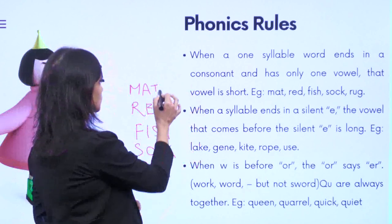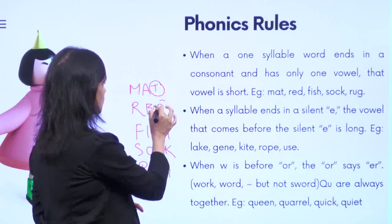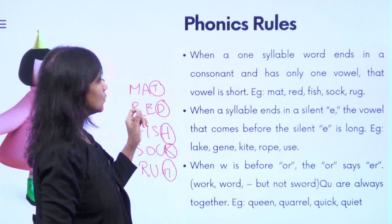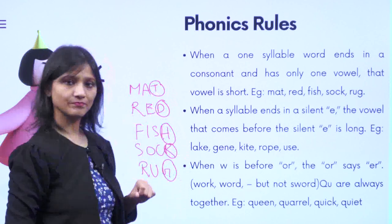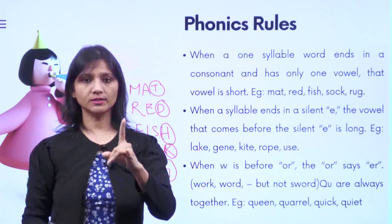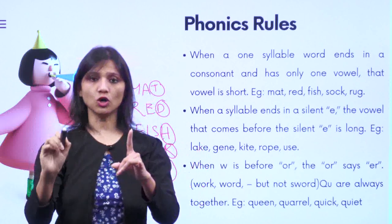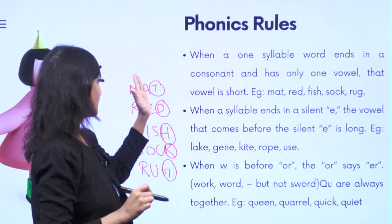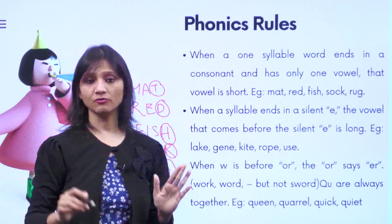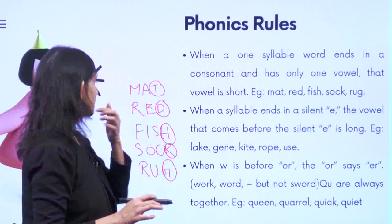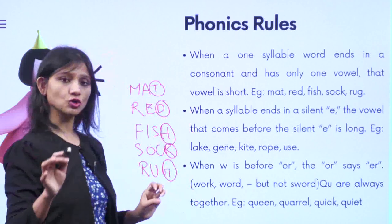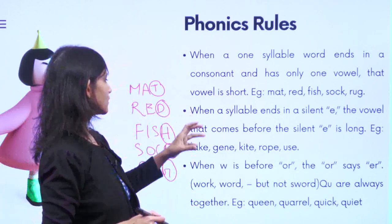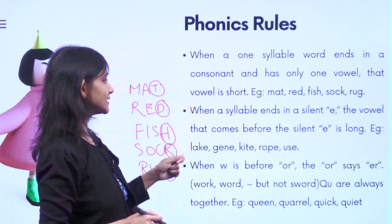When a one-syllable word ends in a consonant — all these are consonants — the vowel is short. So when a one-syllable word like mat, fish, fat, rat, cat ends with a consonant, the sound of the vowel will always be short. The vowel sound will always be short when these words end with a consonant and are one syllable.